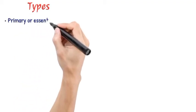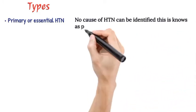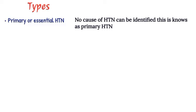Types of Hypertension: There are two types of hypertension. Primary or Essential HTN: In about 95% of cases, no cause of HTN can be identified. This is known as primary HTN and occurs at 20-55 years old.